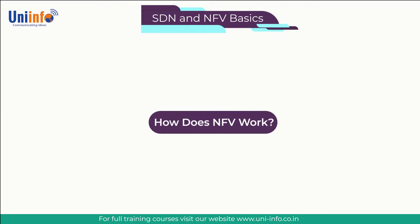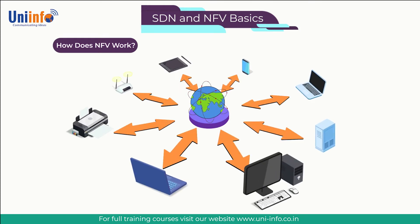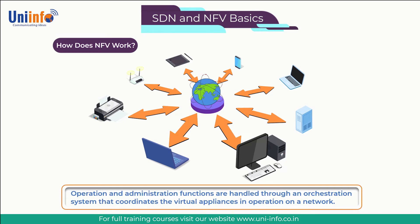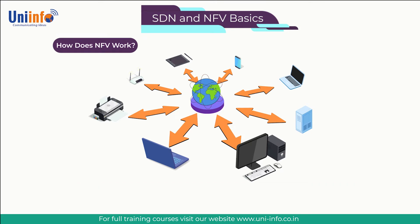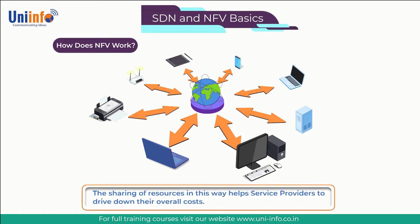How does NFV work? In the NFV model, virtual applications residing on physical or virtual servers replace dedicated hardware-based network appliances. Operation and administration functions are handled through an orchestration system that coordinates the virtual appliances in operation on a network. Like virtual machines, virtual appliances are selected based on end customer needs and deployed as needed. Scaling to adapt to changes in customer needs is based on loading software onto the appropriate servers. When a virtual appliance is no longer needed, the space on the server can be freed up for use by another application. The sharing of resources in this way helps service providers drive down their overall costs.